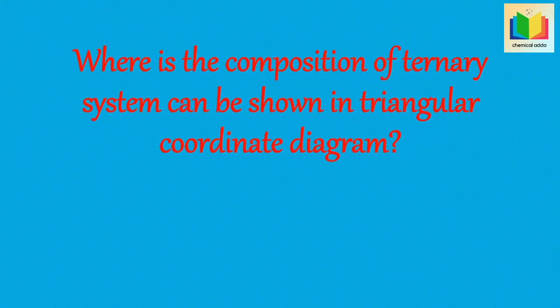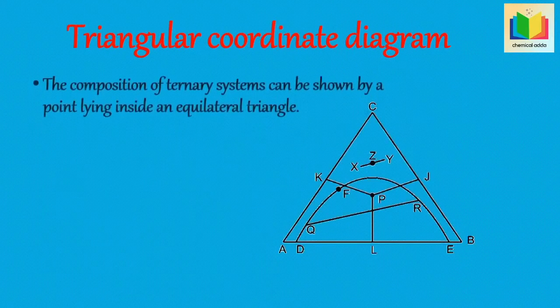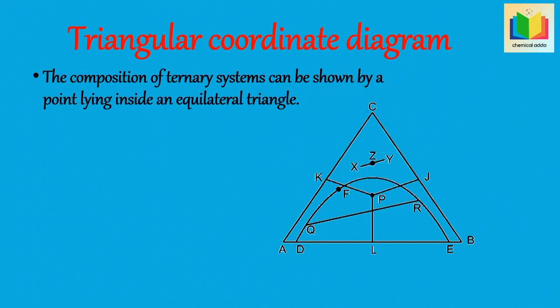Next question: where can the composition of a ternary system be shown in a triangular coordinate diagram? The composition of ternary systems can be shown by a point lying inside an equilateral triangle. In this triangular coordinate diagram, point P represents a ternary system consisting of three components C, A, and B in the ratio of perpendiculars PL, PJ, and PK respectively.